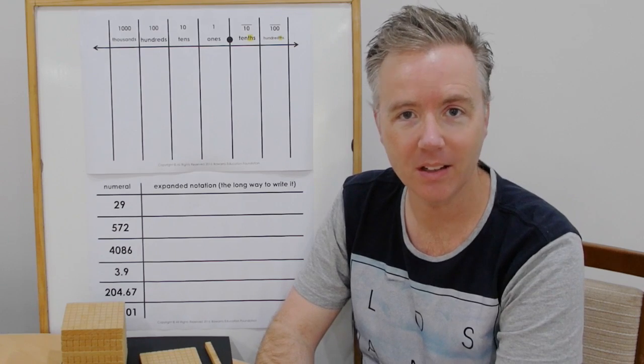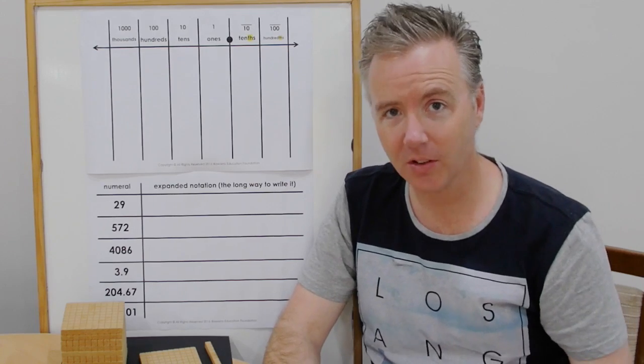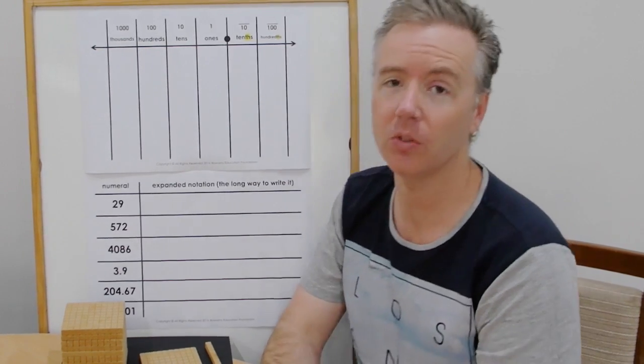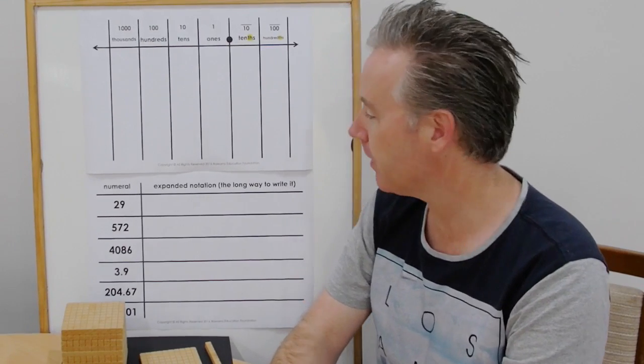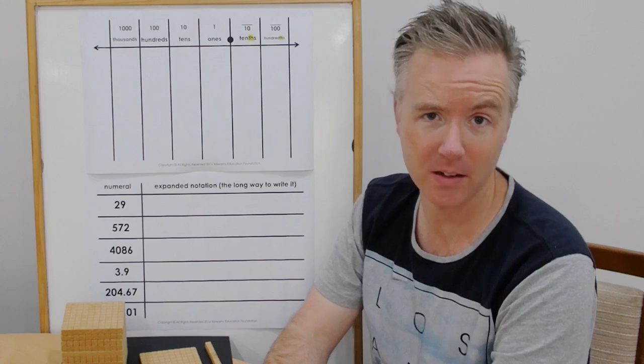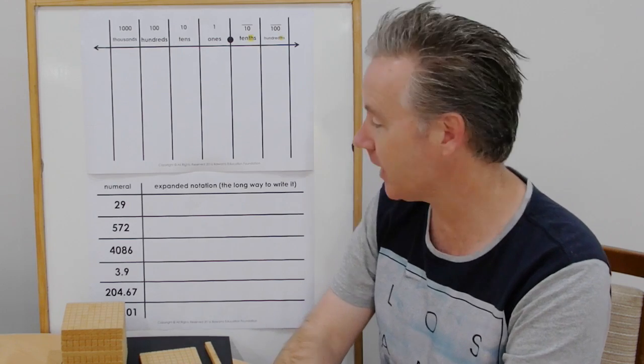So let's make a start. On our second sheet we have our numerals and we're actually going to be placing these numerals into our place value chart today. I also want to talk about expanded notation or the long way to write the number. So let's get started.